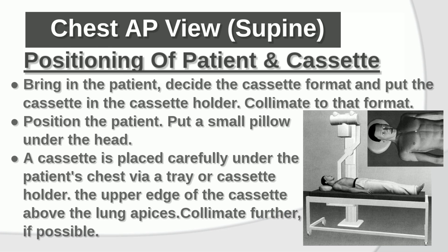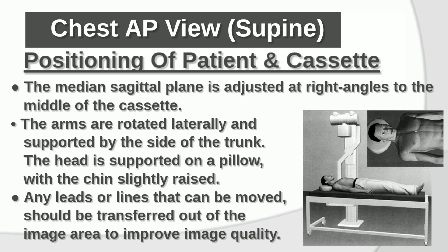Positioning of patient and cassette: Bring in the patient, decide the cassette format, and put the cassette in the cassette holder. Collimate to that format. Position the patient and put a small pillow under the head. A cassette is placed carefully under the patient's chest via a tray or cassette holder, with the upper edge of the cassette above the lung apices. Collimate further if possible. The median sagittal plane is adjusted at right angles to the middle of the cassette. The arms are rotated laterally and supported by the side of the trunk. The head is supported on a pillow with the chin slightly raised. Any leads or lines that can be moved should be transferred out of the image area to improve image quality.